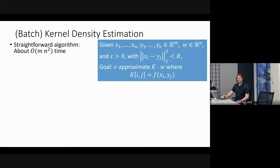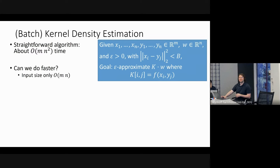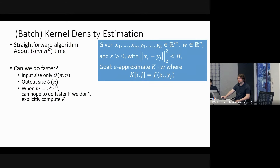How quickly can we solve this problem? The straightforward algorithm runs in about m·n² time — quadratic in n. It just constructs the matrix K, computes all n² entries, then multiplies it by the vector. But we could hope for a much faster algorithm since the input size is only m times n — linear in n — and the output is just a vector of length n.